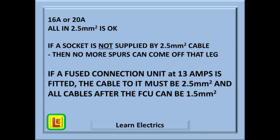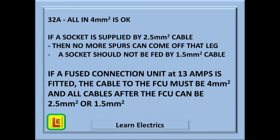A 16 or 20 amp circuit where all the wiring is 2.5 millimetres is fine, but if a socket is not supplied by a 2.5 millimetre cable — say 1.5 millimetres — then no more spurs can come off that leg. However, if a fused connection unit at 13 amps is fitted, the cable to the FCU must be 2.5 millimetres, and then and only then can all the cables be reduced to 1.5 millimetres. For a 32 amp breaker, ideally the whole circuit should be wired in 4 millimetre cable, but if a socket is supplied by 2.5 millimetre cable then no more sockets can be added to that leg. If we fit an FCU at 13 amps, the cable going to the FCU must be 4 millimetres in size, and all cables that come after the FCU can be 1.5 millimetre or 2.5 millimetre.